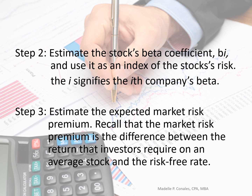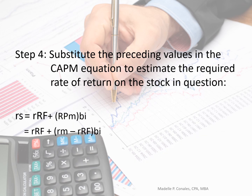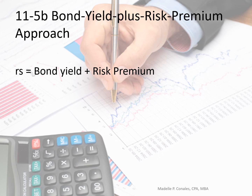Step 3: estimate the expected market risk premium — the difference between the return investors require on the average stock and the risk-free rate. Step 4: substitute the values into the CAPM equation to estimate the required rate of return on the stock, which equals the risk-free rate plus the product of the risk premium multiplied by beta. Another method is the bond yield plus risk premium approach, where the cost of equity equals the bond's yield to maturity plus the risk premium.